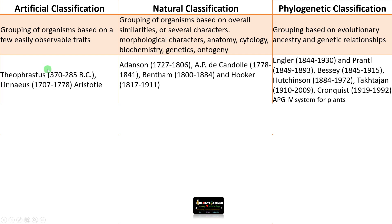Examples of artificial classification include Theophrastus's classification of plants into herbs, shrubs, and trees; Linnaeus's classification; and Aristotle's classification of animals. For natural classification, there is Bentham and Hooker's classification, Adanson's classification, and de Candolle's classification — all focusing on morphology and aspects like anatomy and embryology.